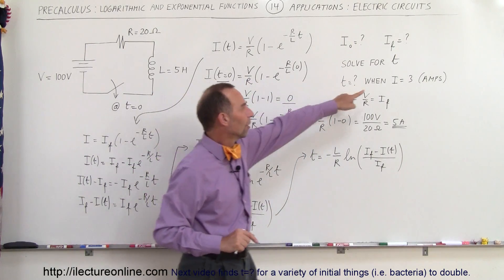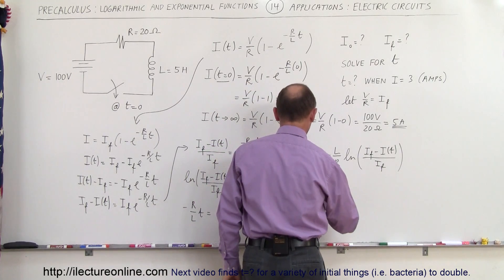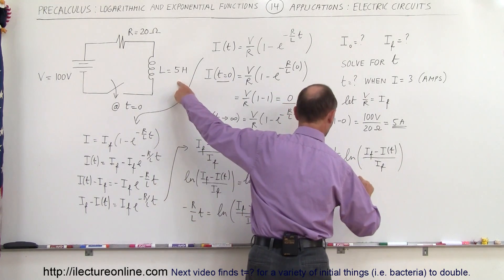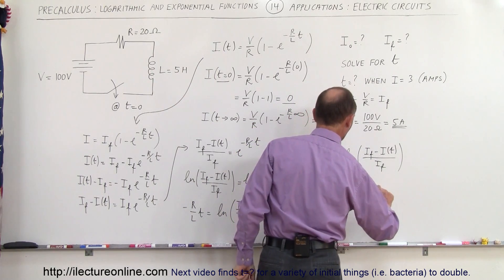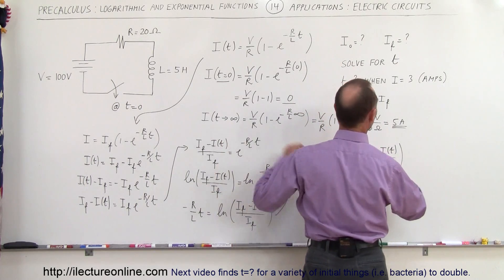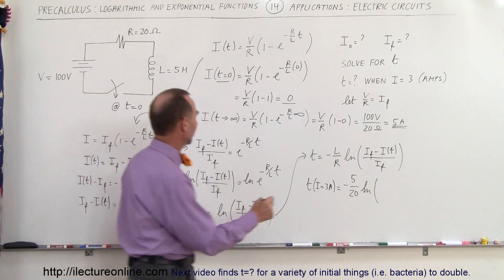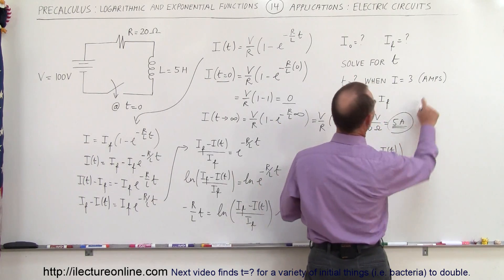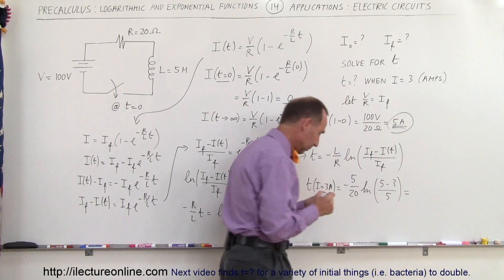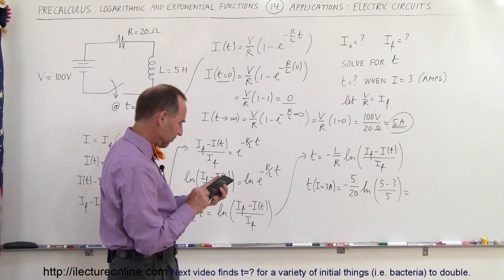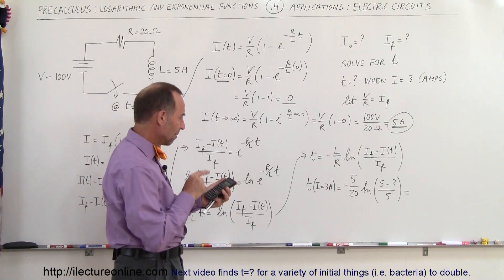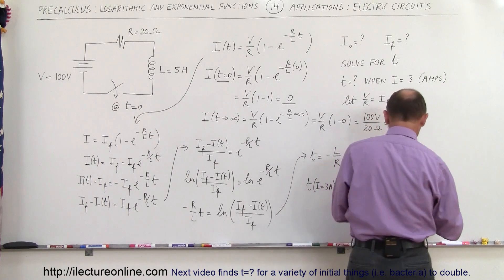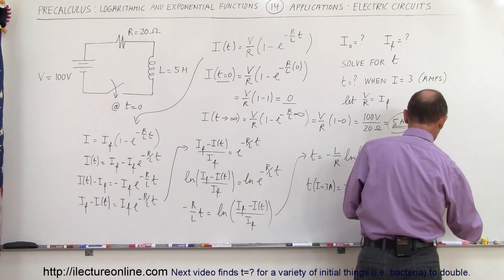Now plugging in all the values to find how much time has elapsed when I equals 3 amps: T equals negative L over R — L is 5 and R is 20 — times the natural log of (I final minus I) over I final, where I final is 5 amps and I is 3 amps. So T equals negative 5 over 20 times the natural log of (5 minus 3) over 5, which is the natural log of 2 over 5. The result is 0.229 seconds.